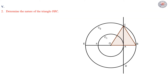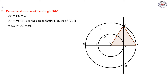In part 2, we have to determine the nature of the triangle OBC. We have OB equal OC equal R2, since they are both radii in the circle C2. And OC equal BC, since C is on the perpendicular bisector of OB. Any point on the perpendicular bisector is equidistant from the two extremities of the segment. Then OB equal OC equal BC. Therefore, triangle OBC is equilateral since it has three equal sides.